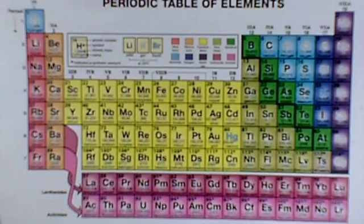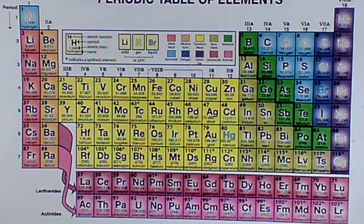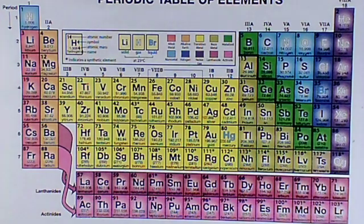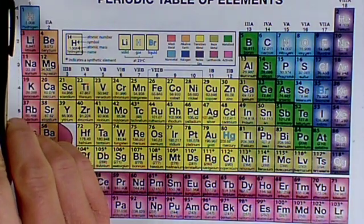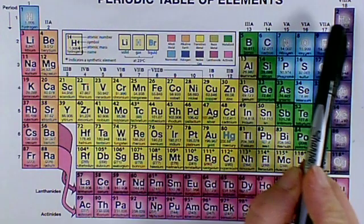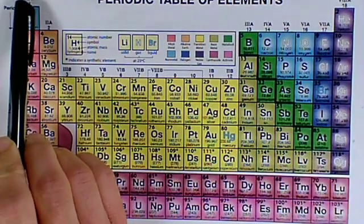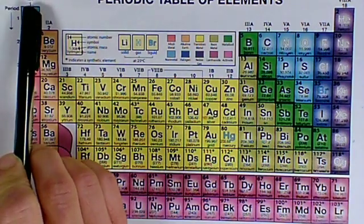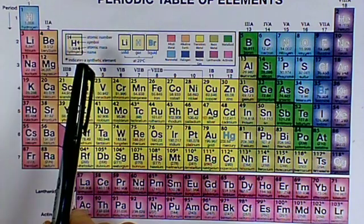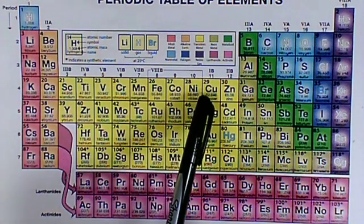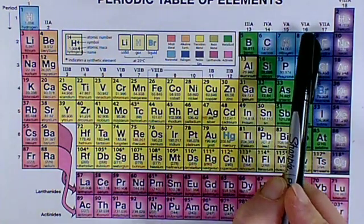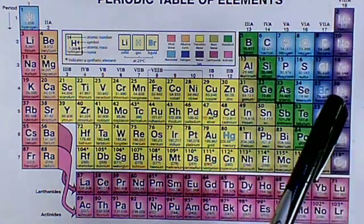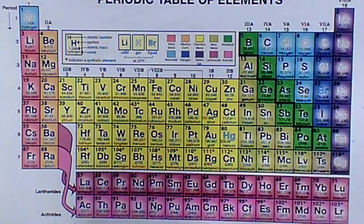If we take a look at our periodic table — and you should have yours out too so that you can see it better as I'm pointing these things out — the groups are across the top here. The groups are 1A, 2A, then there are groups through here: 3A, 4A, 5A, 6A, 7A, and 8A. That is one way to arrange the groups.